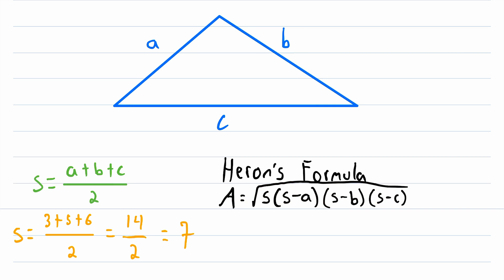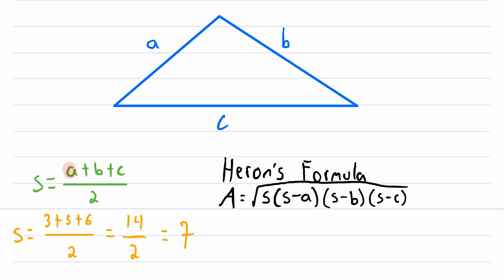If you know all of the side lengths of a triangle, then you can find the semi-perimeter, and then you can find its area. One more time: the semi-perimeter of a triangle is just half of the perimeter. We can find the perimeter by adding up all of the side lengths, so to find the semi-perimeter all we have to do is divide that by two. I hope this video helped you understand what the semi-perimeter of a triangle is and how to find it.